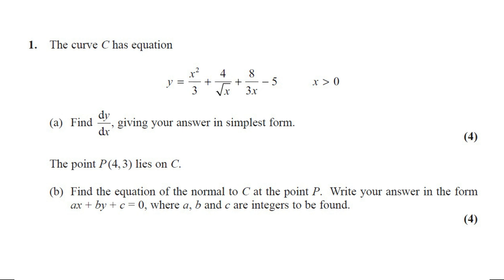Question number 1. The curve C has equation y equals x squared over 3 plus 4 over root x plus 8 over 3x minus 5. Part A: find dy/dx in its simplest form. This question carries 4 marks.